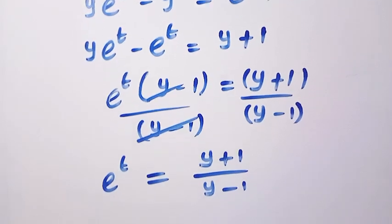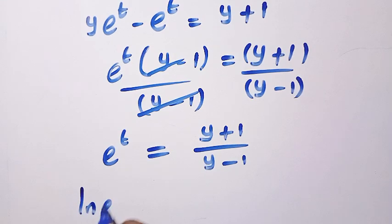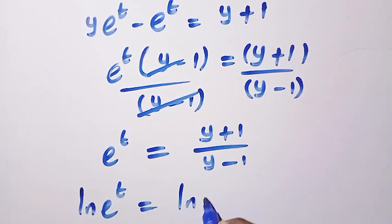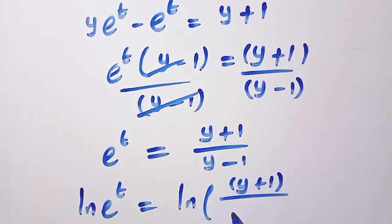To get t, we introduce ln to both sides. So by taking the ln of this side, ln(e^t) = ln[(y + 1)/(y - 1)].